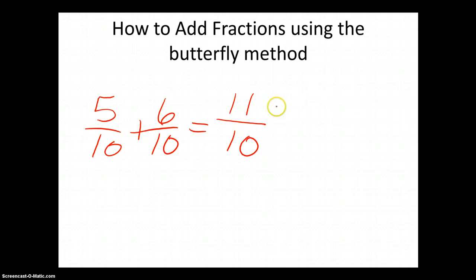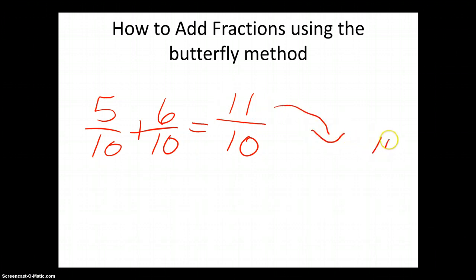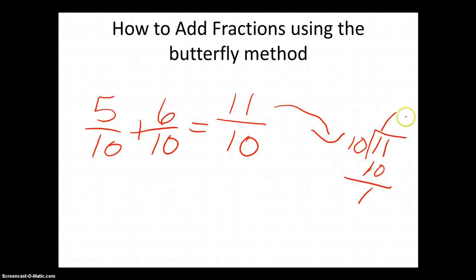Now the last step is to simplify. The eleven in the numerator is way too heavy — that means the whole thing is going to tip over. And when the whole thing tips over, I get eleven divided by ten. Eleven goes in the box, ten on the outside of the box. Ten goes into eleven one time. One times ten is ten, with a remainder of one. My remainder is my numerator and the outside of the box is my denominator — still a ten. My final answer is one and one-tenth.